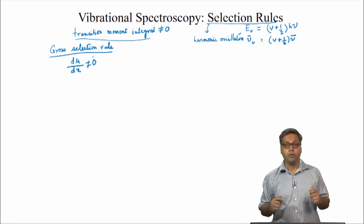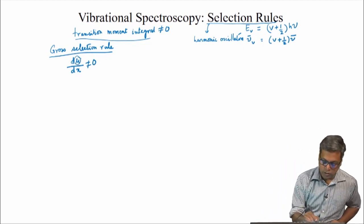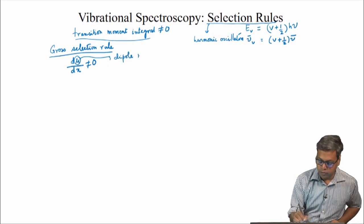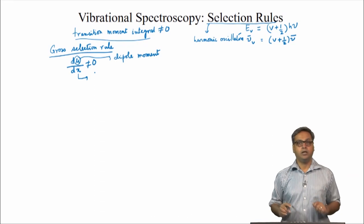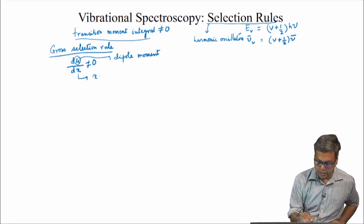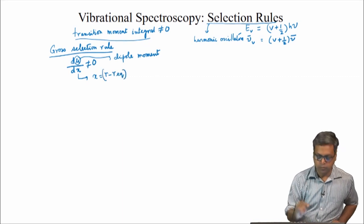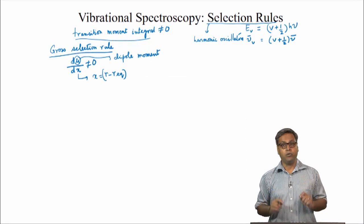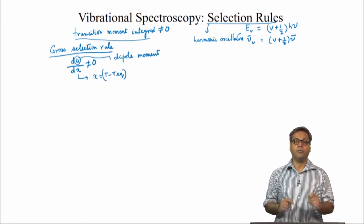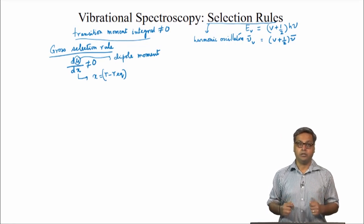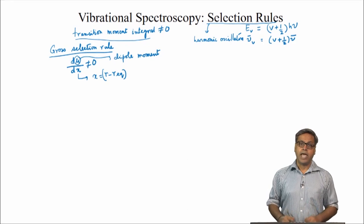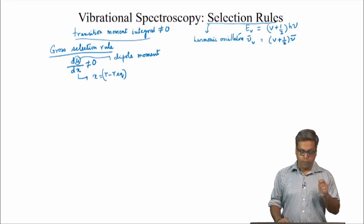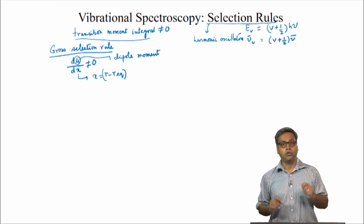Here μ is the dipole moment and x is the displacement from the equilibrium position, that is x equals r minus r_equilibrium. This means that the dipole must change with displacement at the equilibrium position. As the vibration goes through the equilibrium position, the dipole moment of the molecule must be changing. But this does not mean that the molecule has to have a permanent dipole moment, as we saw in the case of rotational spectroscopy.